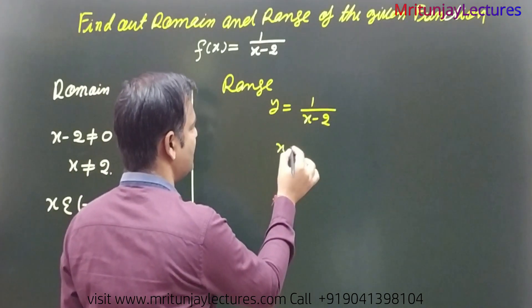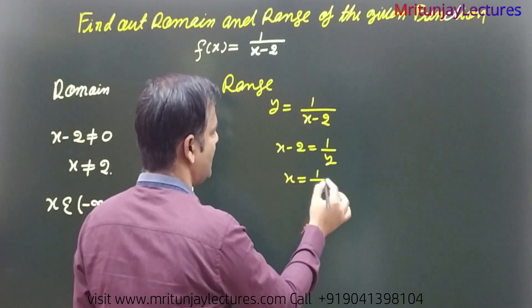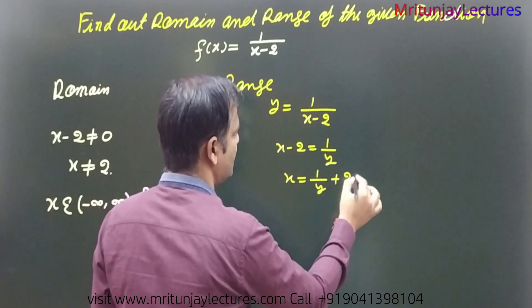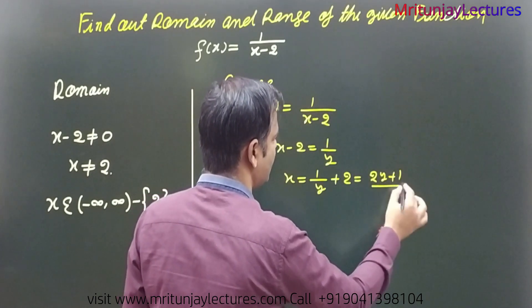So x minus 2 is equal to 1 by y. So basically x is equal to 1 by y plus 2. So that is 2y plus 1 divided by y.